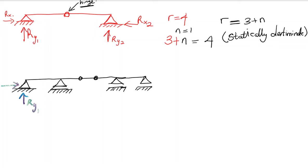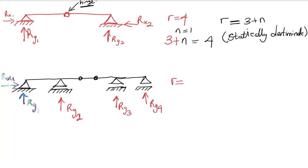For this structure, the pin support gives us Ry1 and Rx1. The sliding supports each give one vertical reaction force: Ry2, Ry3, and Ry4. So in total for this beam, we have one, two, three, four, five — r equals five reaction forces.